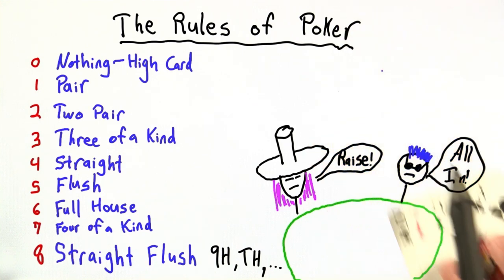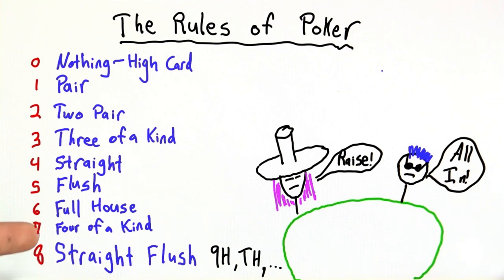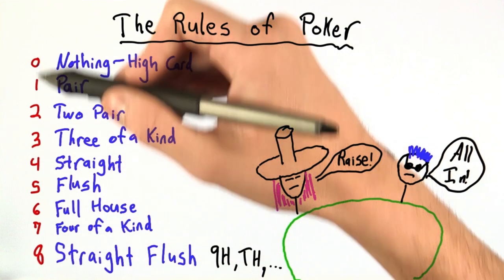And that's it. Those are our nine hands. Straight flush, four of a kind, full house, flush, straight, three of a kind, two pair, pair, and nothing. Notice that we've assigned them all a number. Zero through eight.